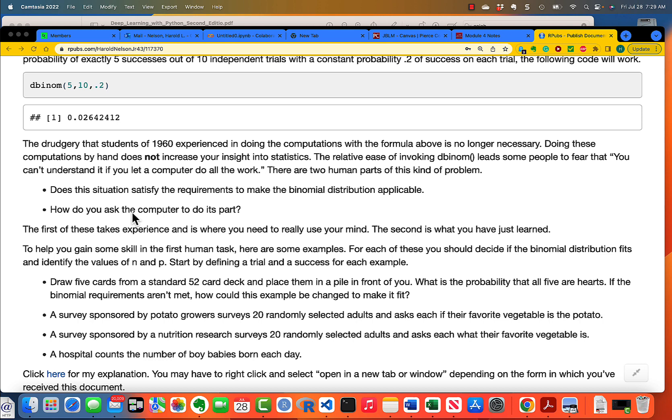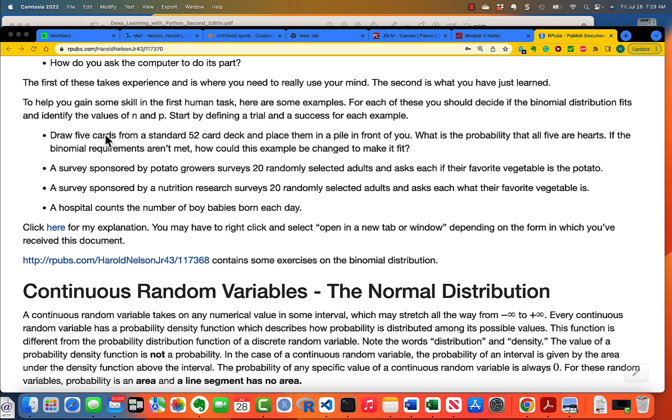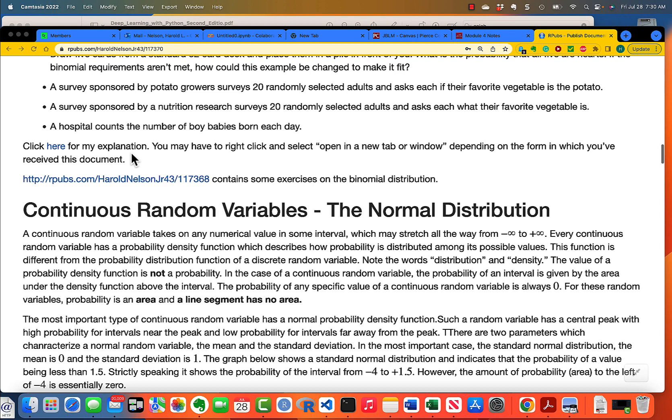Then, the second thing, which is much easier, the second part of the human's task is much easier, is how do you ask the computer to do its part? And I've got here four examples, and you should stop right now and think through these four examples and decide whether or not the binomial distribution is appropriate. And after you've done that thinking, click here for my explanation. That's a YouTube video in which I explain these four. And I've also created some exercises on the binomial distribution for you to play with to get familiar with it.